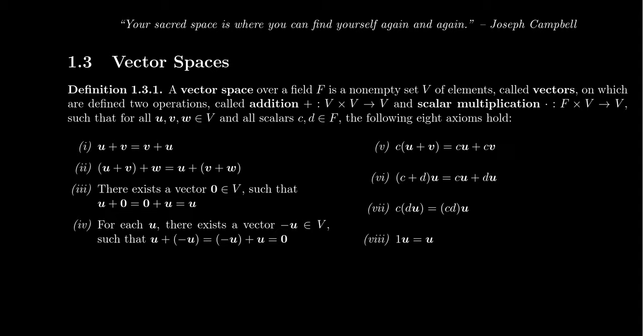We should be able to add vectors together, and we should be able to scale a vector by a different type of number, which we call scalars. Scalars we've already talked about in the context of a field. Vectors themselves are going to be different types of numbers which, borrowing from physics, have both direction and magnitude. To formally define what a vector is, we're going to first define the notion of a vector space — a collection of vectors satisfying certain conditions. Our primary goal will be to discuss vector spaces over the real field, the field of real numbers.